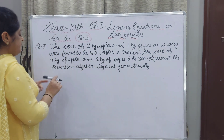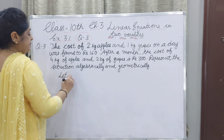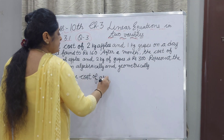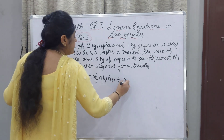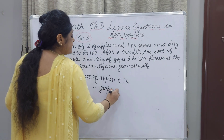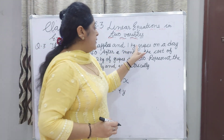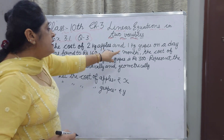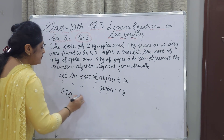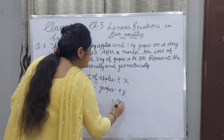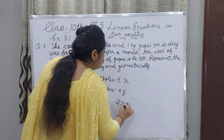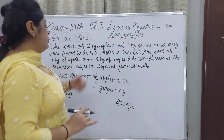Now we will let the cost of apples be Rs. X and let the cost of grapes be Rs. Y. According to the first statement, 2 kg apples gives 2X and 1 kg grapes gives Y, so our equation will be 2X plus Y equals Rs. 160.